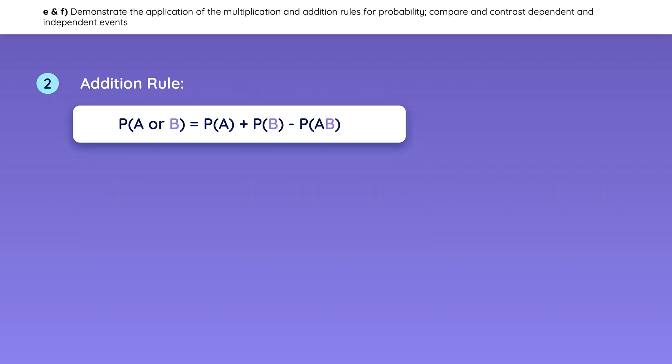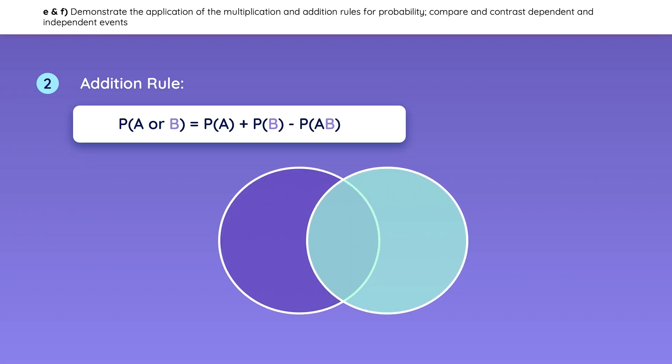To remember the addition rule, you can think of a Venn diagram. The probability of A or B is found by adding the probability of A and the probability of B and taking away the probability of A and B.